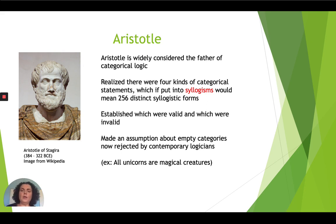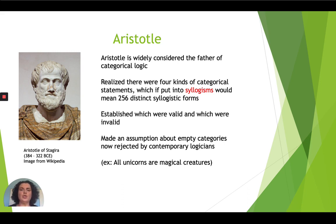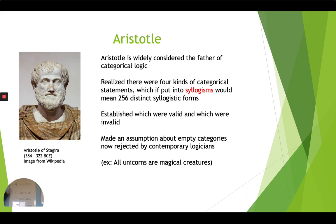I want to give a quick historical note about Aristotle of Stagira, from 384 BCE to 322 BCE. If you're interested in Aristotle and his philosophy, please check out my other YouTube video with a longer lecture series. Aristotle is widely considered the father of categorical logic. He realized that there are four different categorical statements: All S are P, No S are P, Some S are P, and Some S are not P.